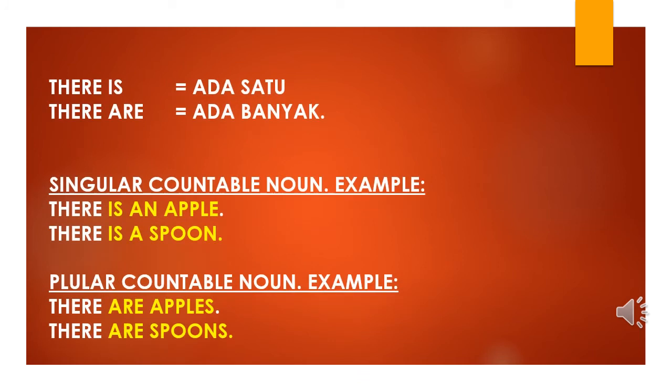In slide 3, we show the existence of the object. If we have one object, we will use there is. There is means ada satu. If we have many objects of existence, we will say there are. There are means ada banyak. We have many existence of the objects in the sentences or in the environment. Singular countable noun, for example: there is an apple, there is a spoon. For plural countable noun, for example: there are apples, there are spoons.